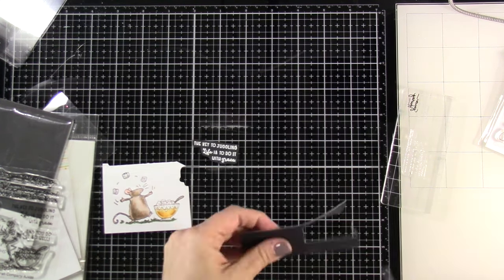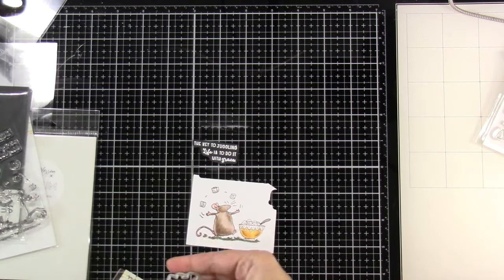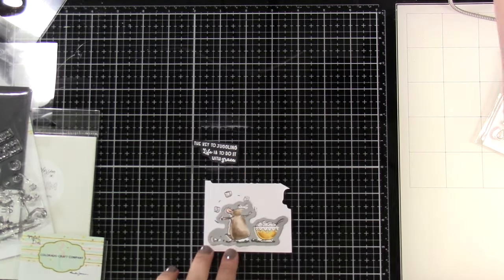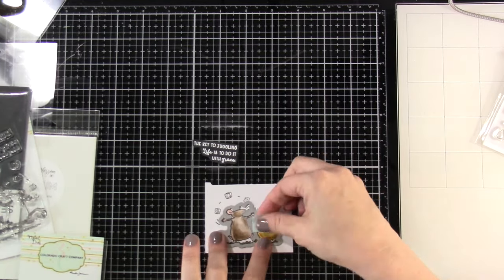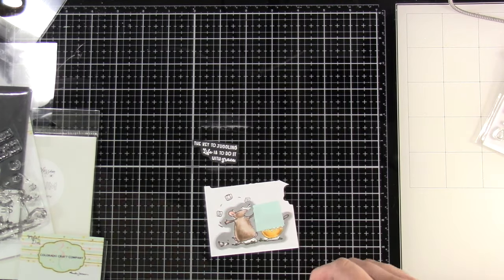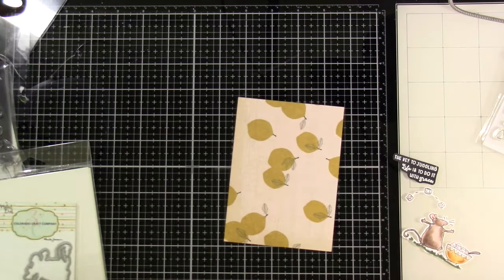Once I'm done with that we can bring in the matching die that goes along with our darling little spoonful of sugar. Tack that down with a little bit of mint tape and run that through our die cutting machine, and I can even cut out the sugar.